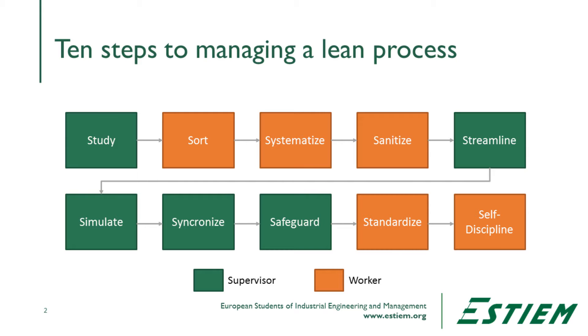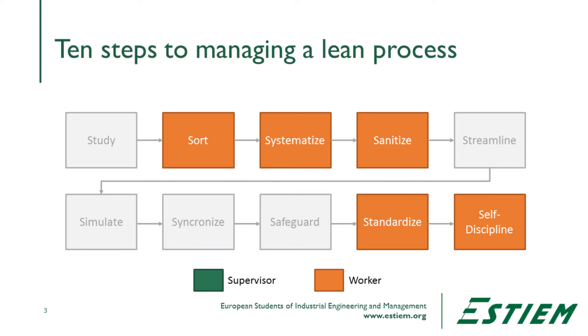We see there are 10 steps. The five steps of 5S are pretty commonly known to most people in industrial engineering: sort, systematize, sanitize, standardize, and self-discipline in English.